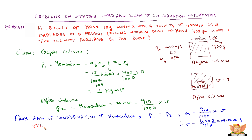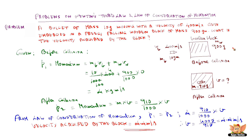Therefore the velocity acquired by the block after the bullet got embedded into it is 4.4 meters per second. So v = 4.4 m/s.